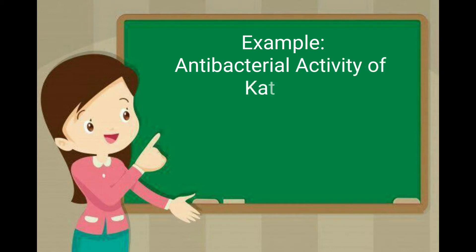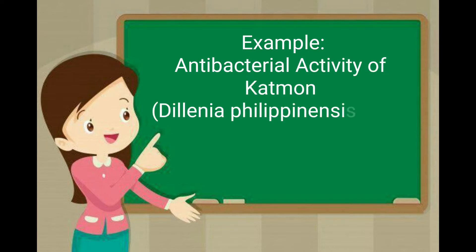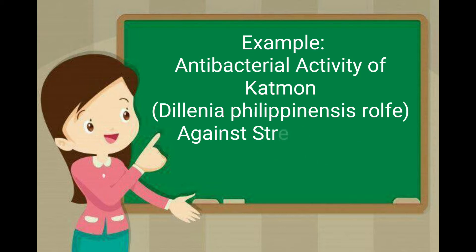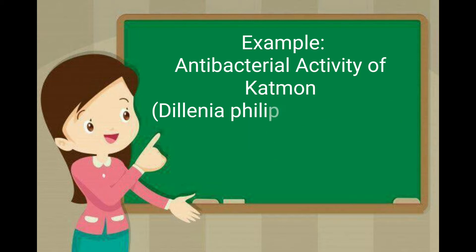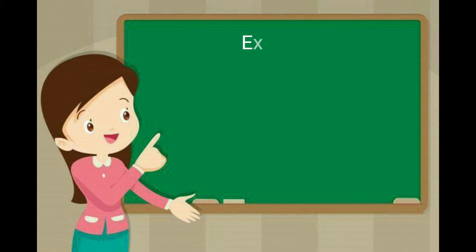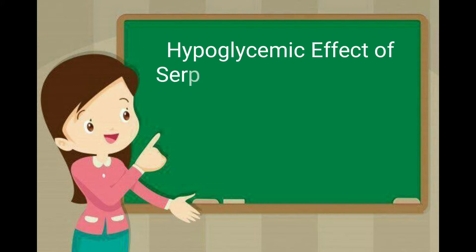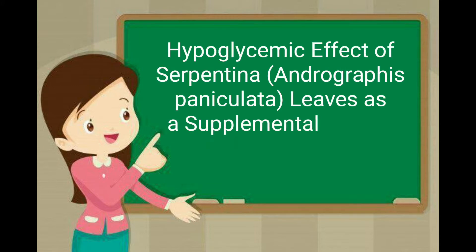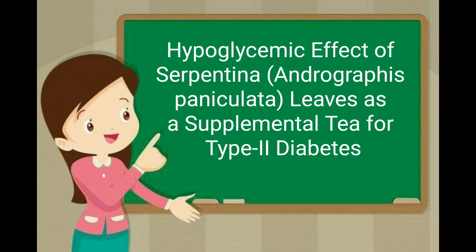For example, anti-bacterial activity of catmon (Dillenia philippinensis Rolfe) against Streptococcus pyogenes. Another example: hypoglycemic effect of serpentina (Andrographis paniculata) leaves as a supplemental tea for type 2 diabetes.